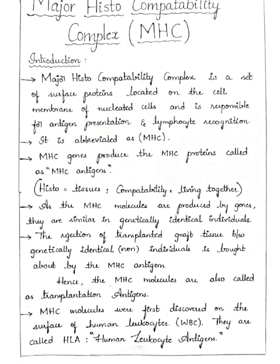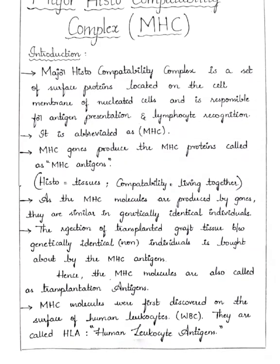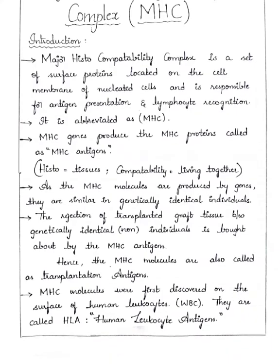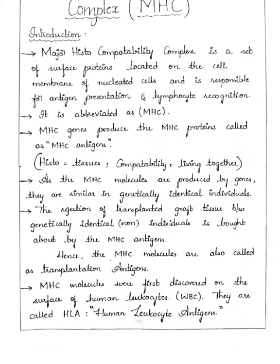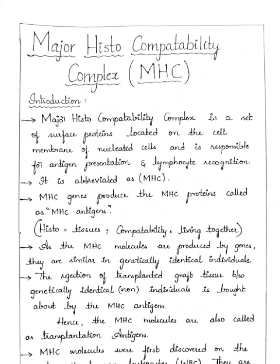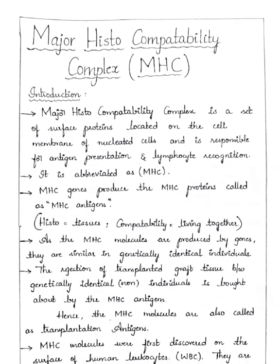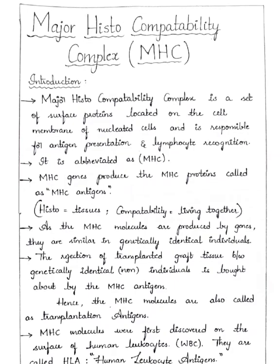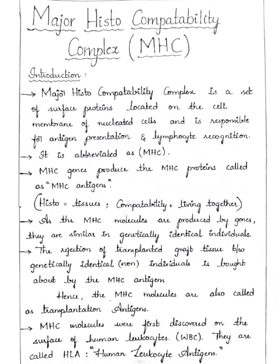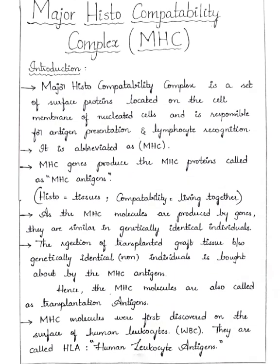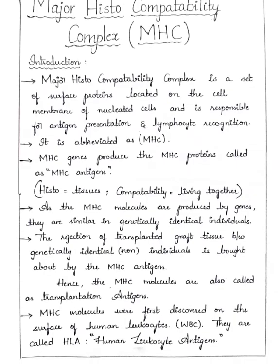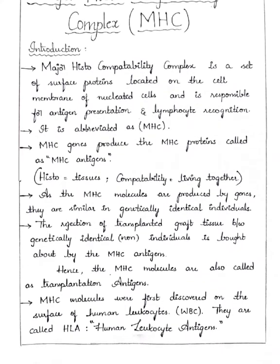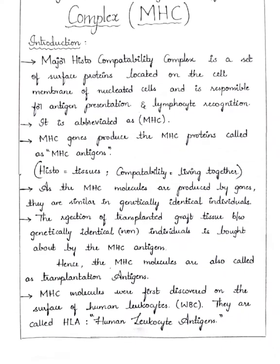In this term, 'histo' means tissues and 'compatibility' means living together. As MHC molecules are produced by genes, they are similar in genetically identical individuals. The rejection of transplanted graft tissue between genetically non-identical individuals is brought about by MHC antigens, hence MHC molecules are also called transplantation antigens. MHC molecules were first discovered on the surface of human leukocytes — white blood cells — and they are called HLA: Human Leukocyte Antigens.